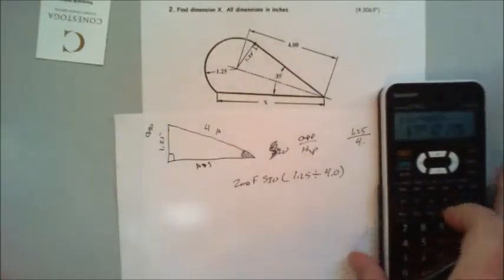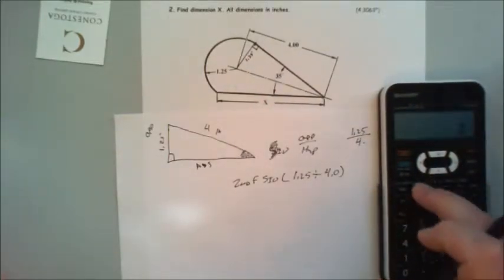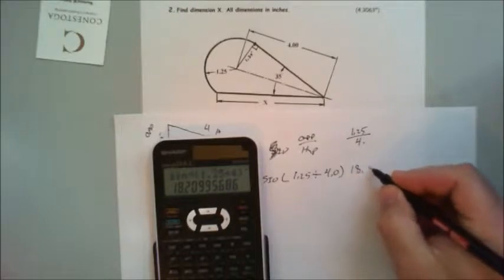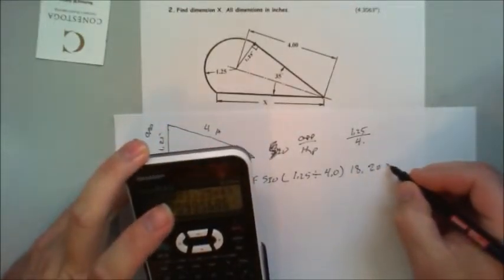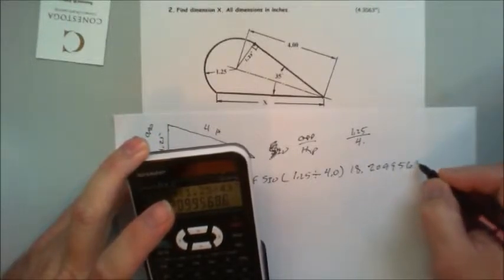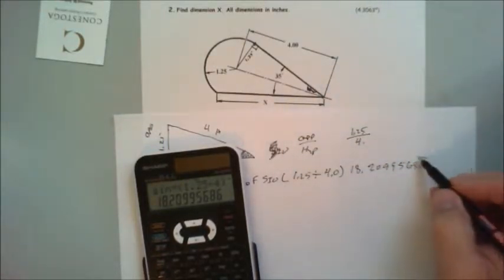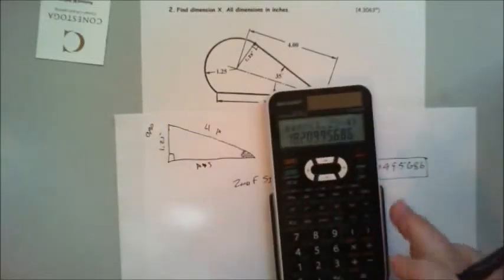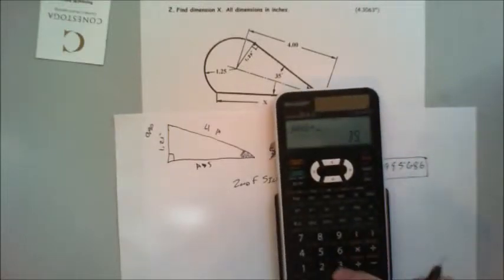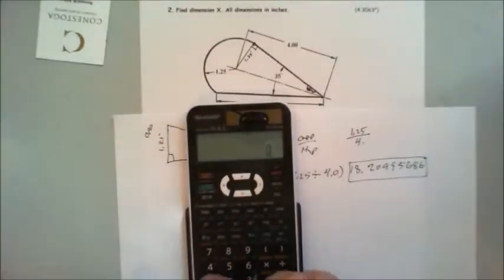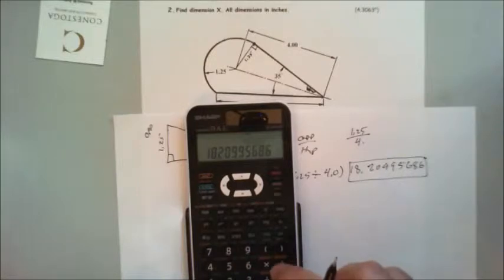Don't go 4 divided by 1.25, you will come up with a total different number. Second function, sine, bracket 1.25 divided by 4, bracket equals 18.20995686. Therefore, this angle here is this guy here. I'm going to say minus 35 equals, and I put divide, 18.20995686 minus 35.